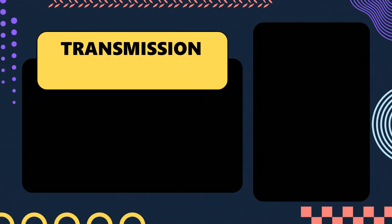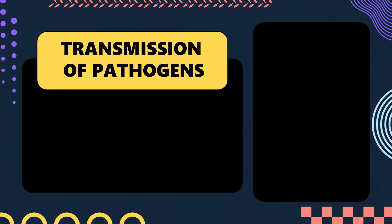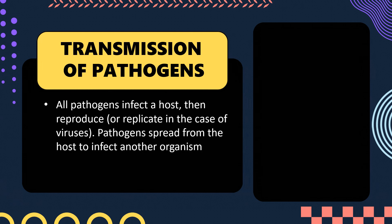Now let's discuss the transmission of pathogens — how pathogens transfer from one person to another to find a new host. Transmission can occur via direct contact, when an infected person contacts a healthy person. They can also spread through air — if a healthy person breathes in contaminated air, they will inhale the pathogens.